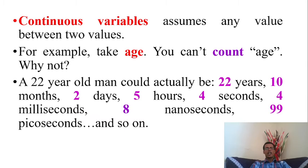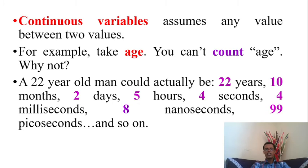For example, age can be expressed as 22 years with 10 months, with 5 hours, with 4 seconds, with 4 milliseconds, with 8 nanoseconds, with 99 picoseconds. So age is a continuous variable. A continuous variable can assume any value between two values, illustrating its infinite number of possibilities.